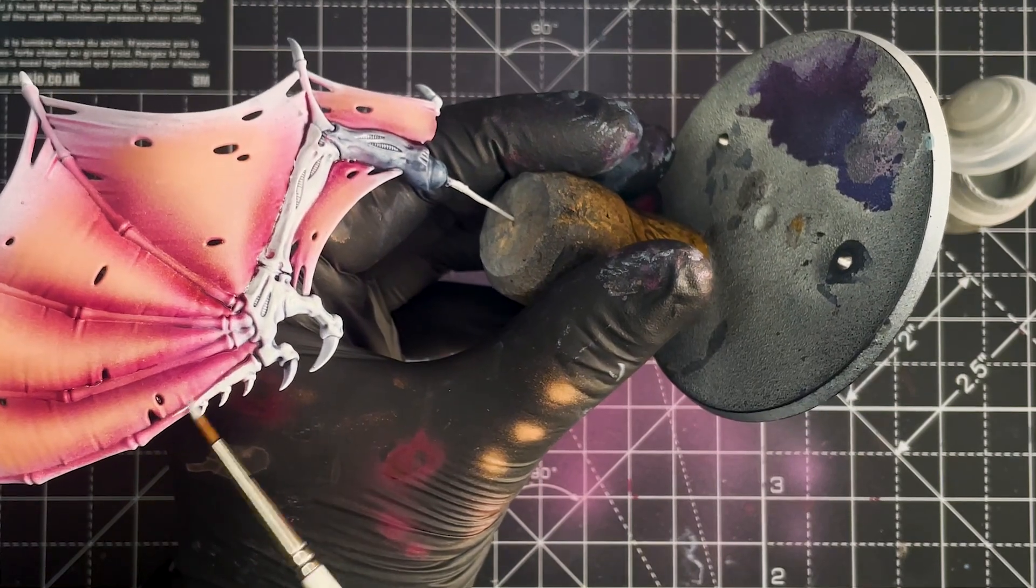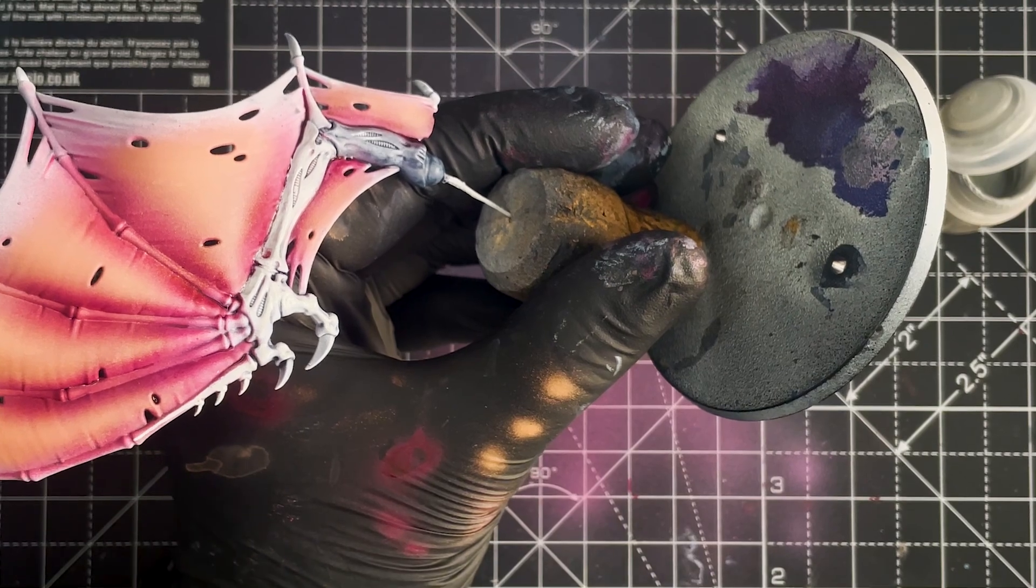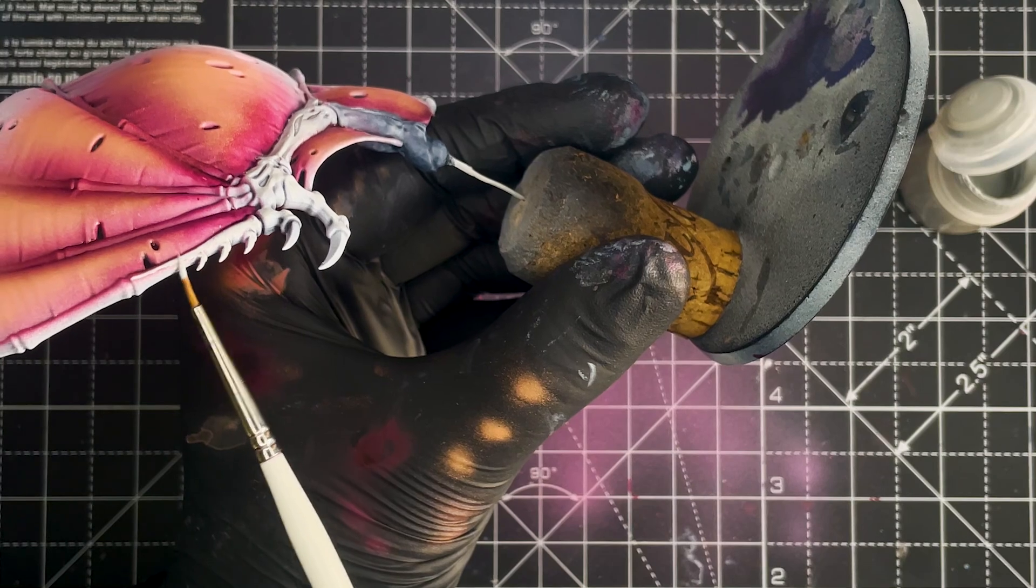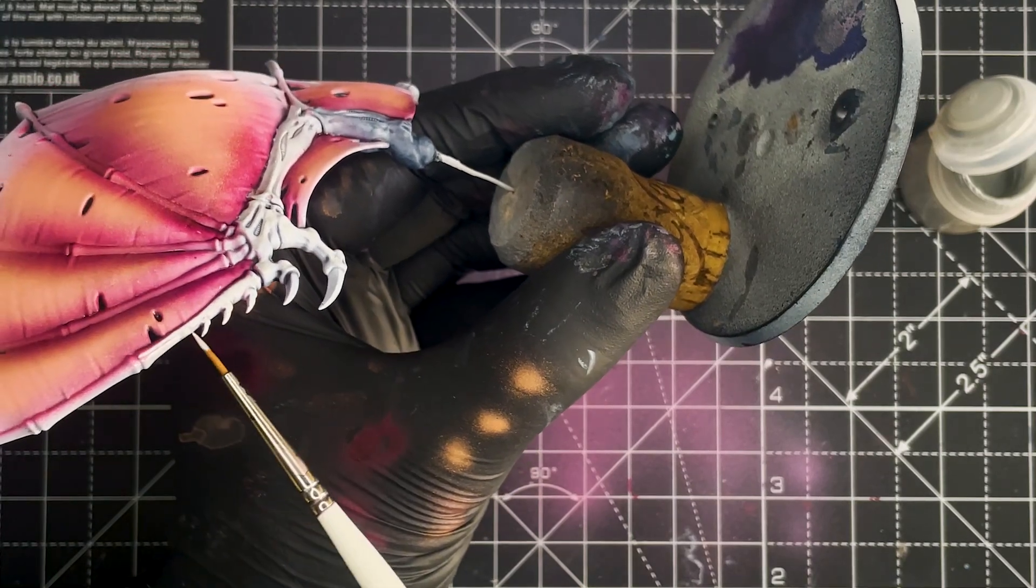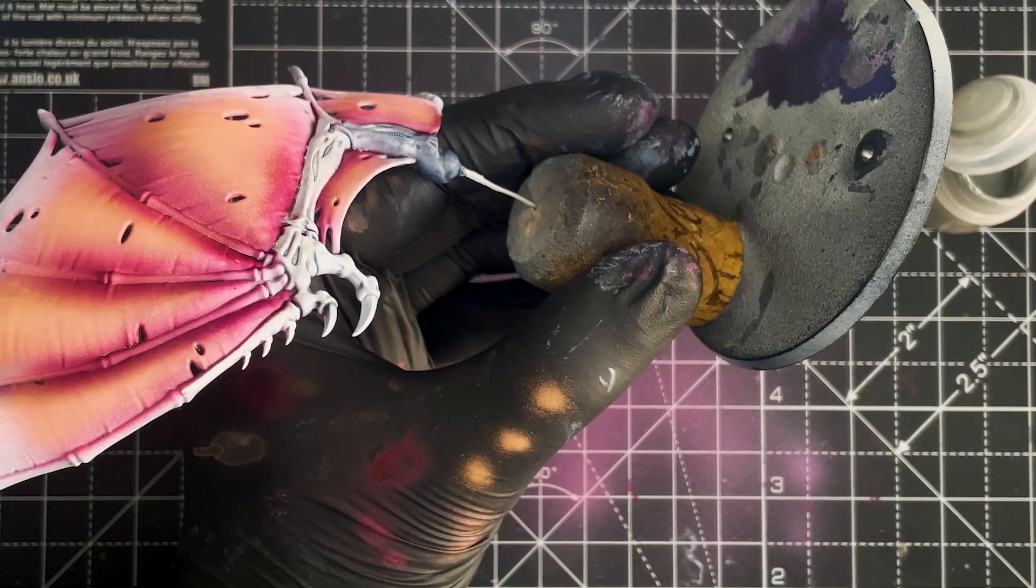I'm really happy with the way these wings turned out. I really like the way the pink and the flesh work together and really pop on the model. And I think I'm going to go with this recipe when I do finally get round to painting up the Harridan model.